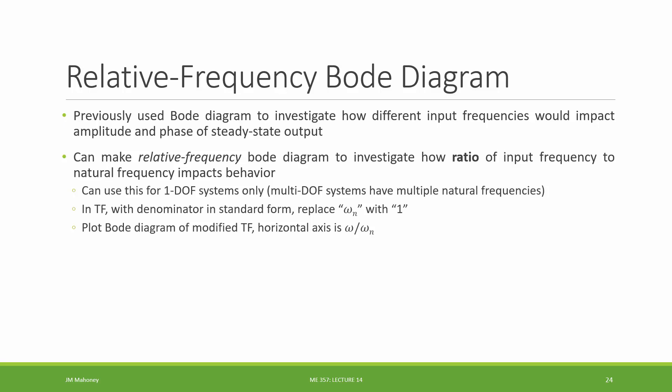All right, so what we're going to be doing is making our transfer function, but really, we're making it with an unknown natural frequency initially. And this is useful—when do we use the relative frequency Bode diagram? Really, when we're designing a system, and maybe up front, we don't know what the K, the M, the B necessarily are right away, and we're trying to choose them to have some output that's desired.